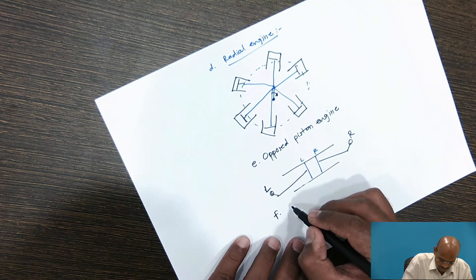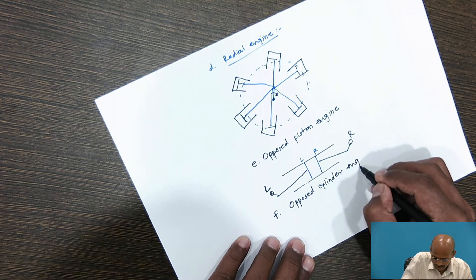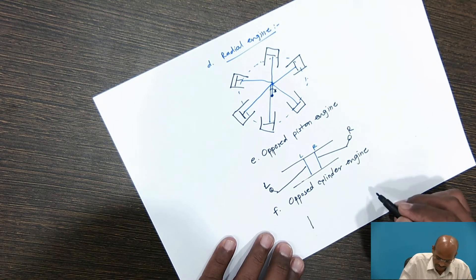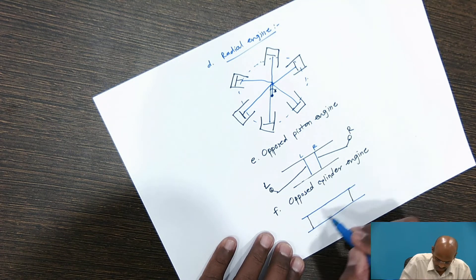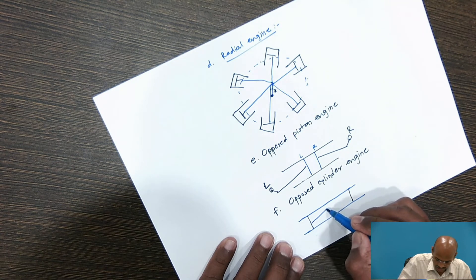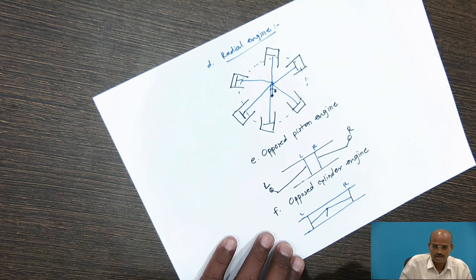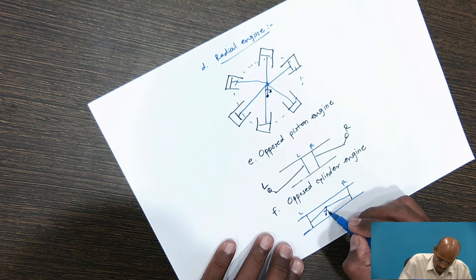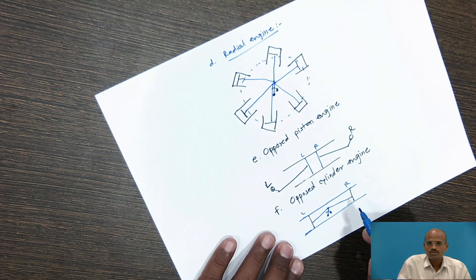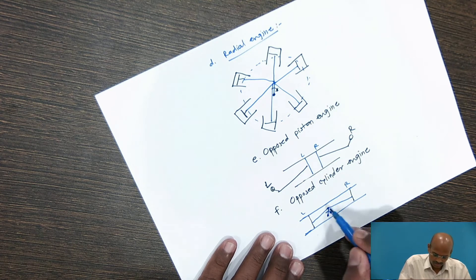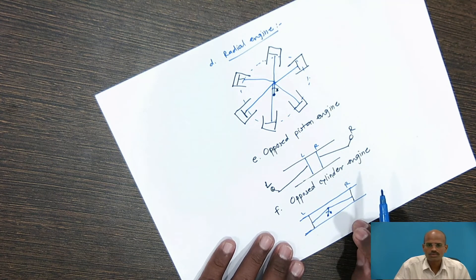Next type is the opposed cylinder engine. Here there is a left hand piston and a right hand piston within the cylinder, each with their own connecting rod connected to a single crank. The crank rotates in the clockwise direction and the pistons reciprocate. To get maximum power from a single cylinder, you can go for the opposed cylinder type of engine. These are all the classifications of engines.